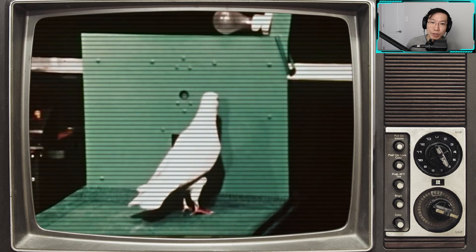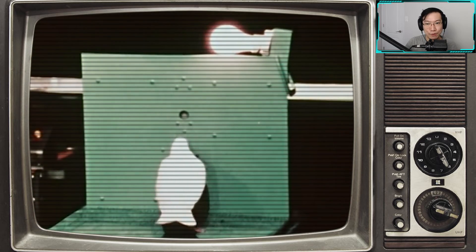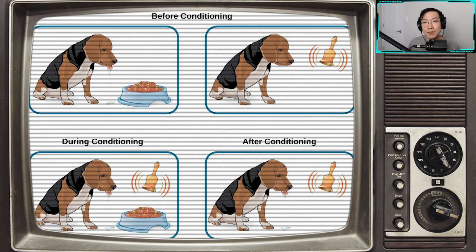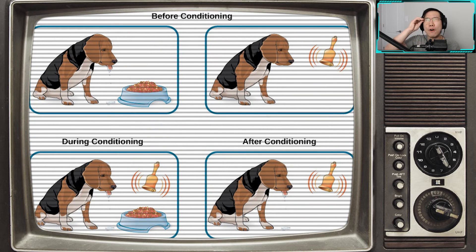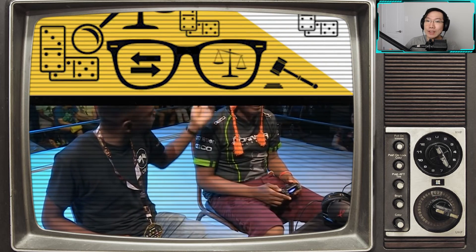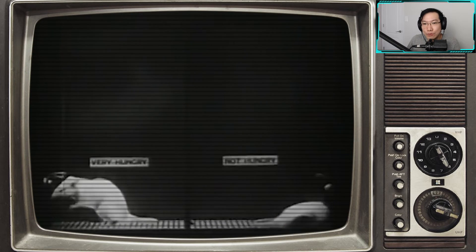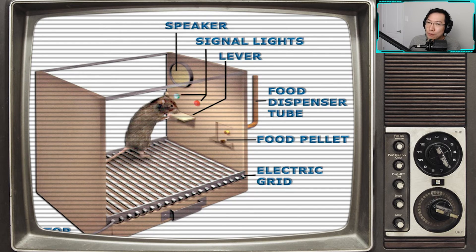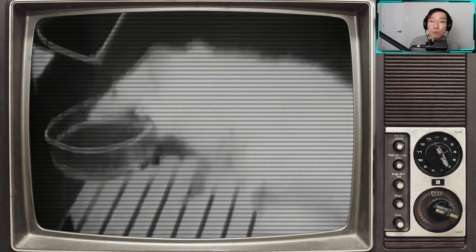Operant conditioning was a term coined by B.F. Skinner in 1937 and consists of learning through the consequences of one's behavior. Instead of mere association, Skinner believed that classical conditioning was far too simplistic to completely explain complex human behavior. So he proposed that the best way to understand behavior is to look at the causes of an action and its consequences. The most well-known example was through the use of his invention called the Skinner box, which rewarded test animals with food for completing a task.